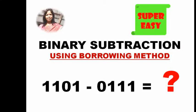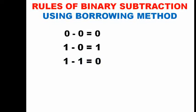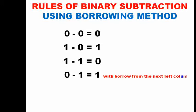Hello, our topic today is binary subtraction using the borrowing method. Here on the screen you will find some rules of binary subtraction using the borrowing method. The first rule is 0 minus 0 is 0. Second rule is 1 minus 0 is 1. Third is 1 minus 1 is 0. And the fourth one is different: 0 minus 1 would be 1 with a borrow from the next left column.